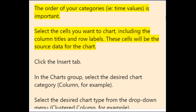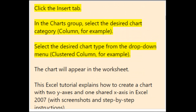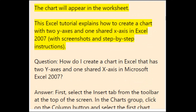To create a chart, select the cells you want to chart, including column titles and row labels — these will be the source data. Click the Insert tab. In the Charts group, select the desired chart category (e.g., Column). Select the desired chart type from the drop-down menu (e.g., Clustered Column). The chart will appear in the worksheet.